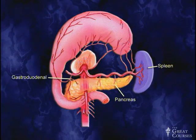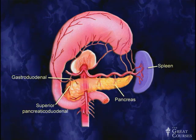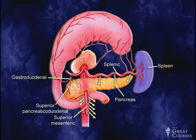The blood supply of the pancreas is very rich. The gastroduodenal artery comes down and gives off the superior pancreaticoduodenal artery, which gives branches to both the pancreas and duodenum. There are branches dropping off from the splenic arteries and from the superior mesenteric artery supplying the pancreas. This is important for its survival, but also presents a problem surgically — the pancreas can be very difficult to operate on because of this tremendous blood supply, requiring many vessels to be clamped and cut before the pancreas can be removed or partially removed.